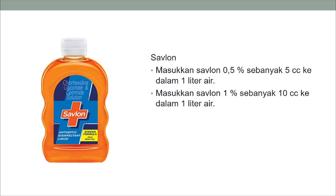Savlon: masukkan savlon 1,5% sebanyak 5 cc ke dalam 1 liter air. Atau masukkan savlon 1% sebanyak 10 cc ke dalam 1 liter air.